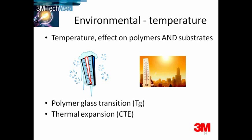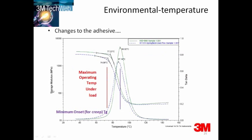Adhesives themselves are affected by the glass transition temperature. The glass transition temperature, Tg, is the temperature at which segmental motion of polymer chains will begin. It defines the point at which most polymers go from a hard state to a soft state. This transition point has a large effect on mechanical properties such as modulus of the material, as can be seen from this plot.